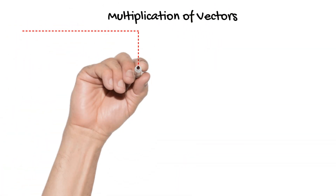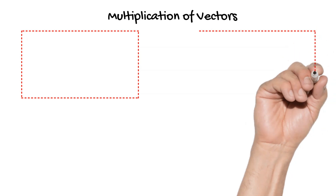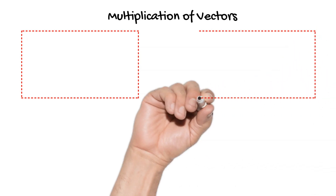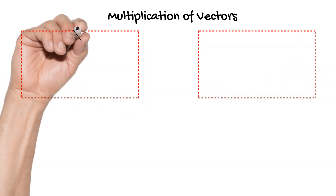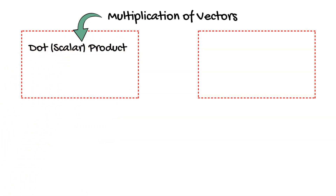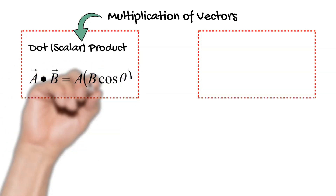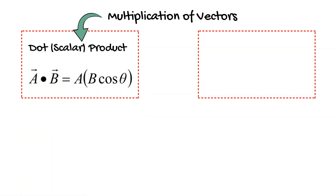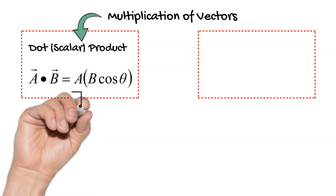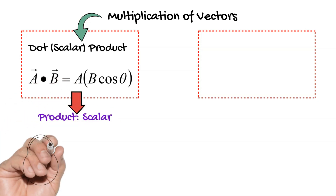Today we will learn multiplication of vectors. There are two types of multiplication of vectors. The first one is called the dot product or scalar product. The formula is a dot b equal to a b cos theta. It is called a scalar product because the product we get is a scalar quantity.